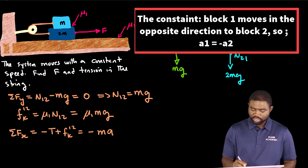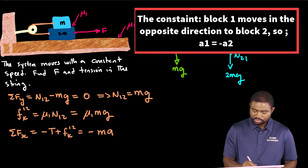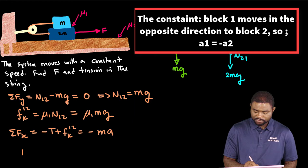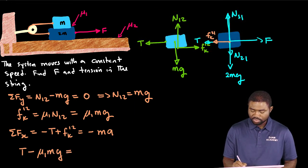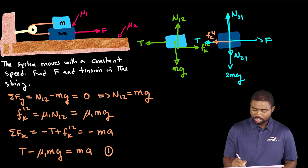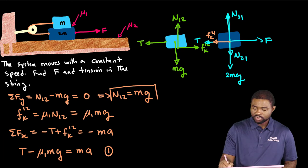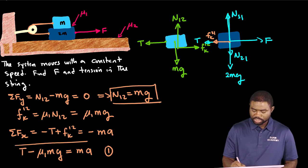So if we simplify, if we multiply throughout by minus, we will have T minus μ1 mg equal to ma. Let's call this equation one.